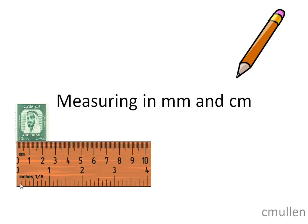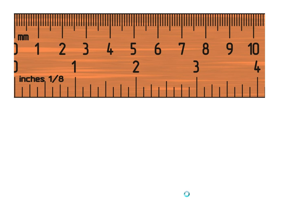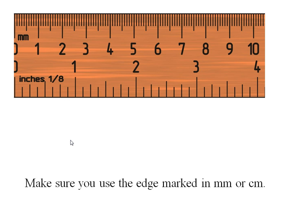We use millimetres and centimetres to measure the length of small objects. One side of your ruler is marked in millimetres and centimetres. The other side is marked in inches. Remember to use the side marked in millimetres and centimetres.